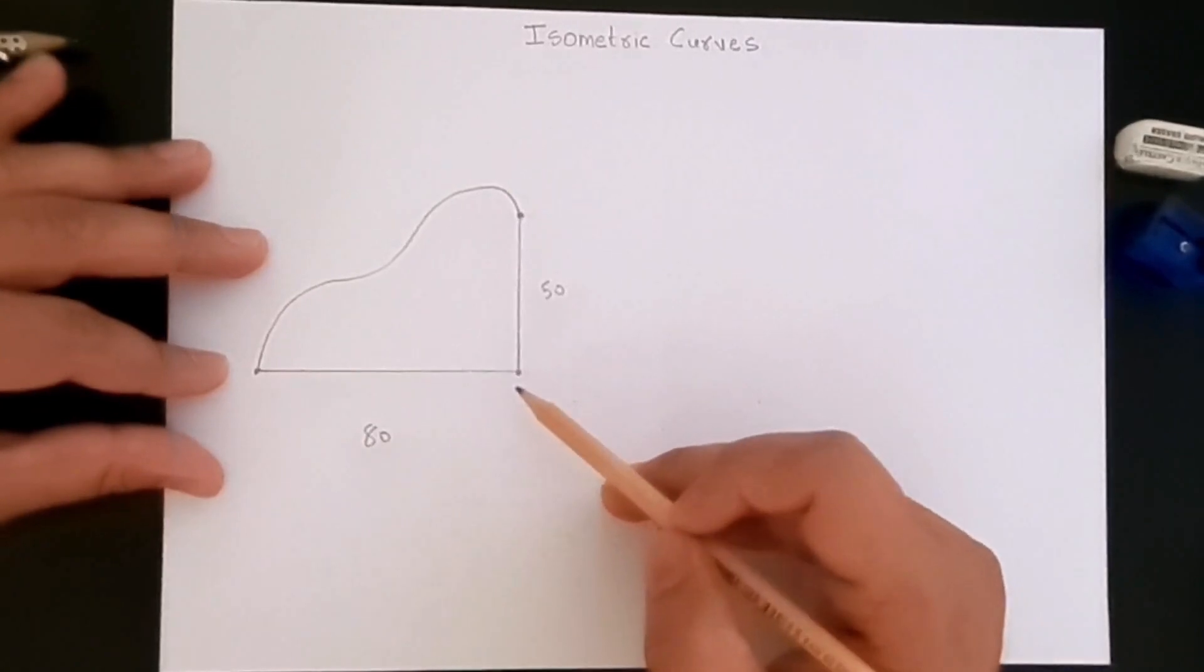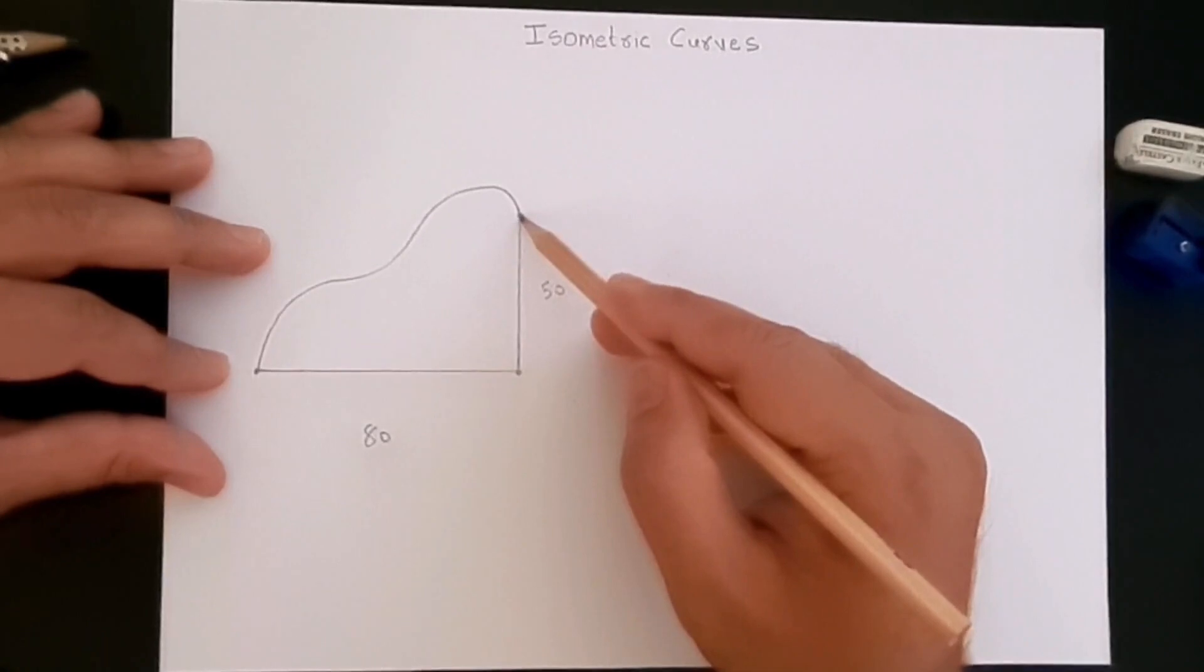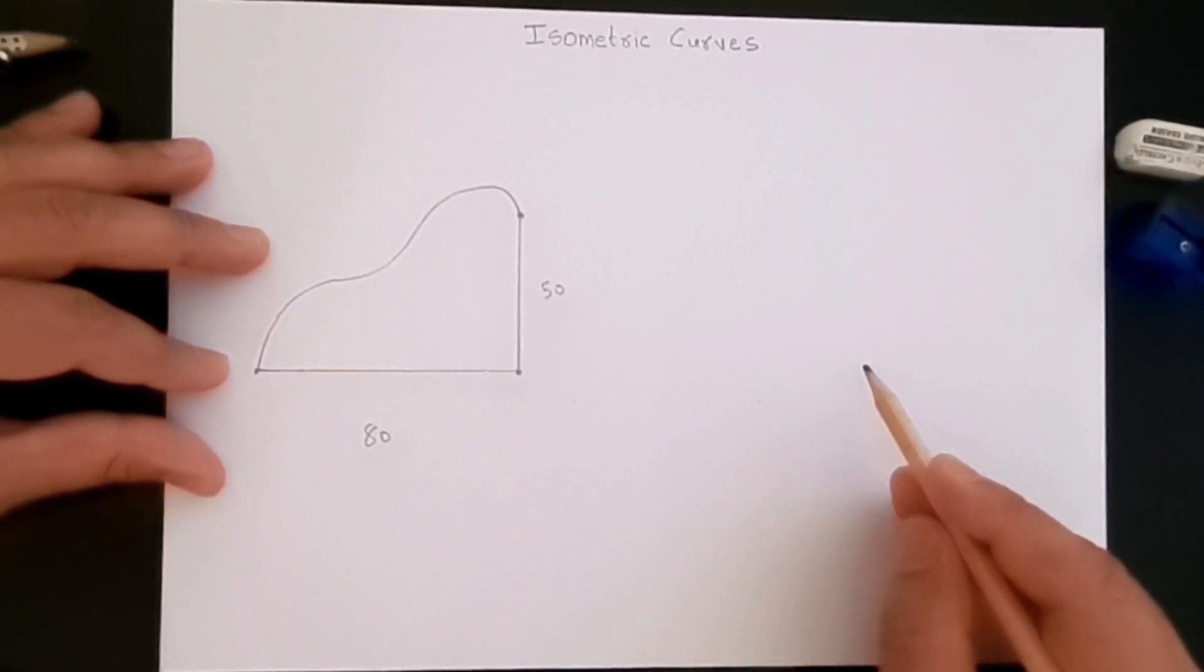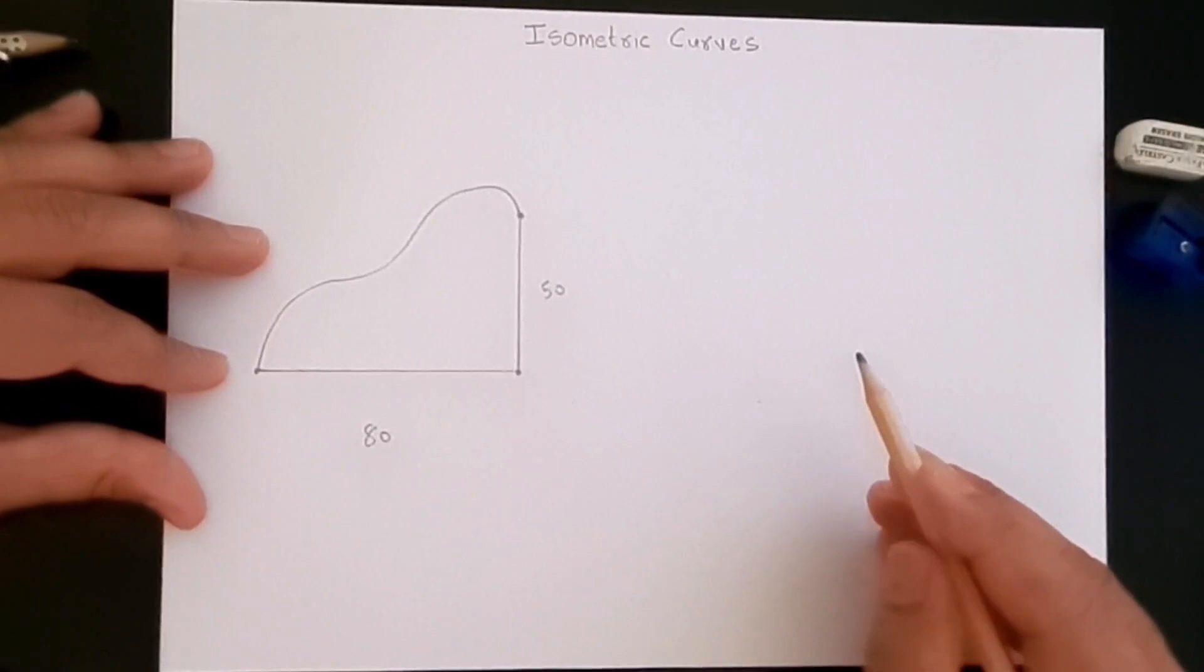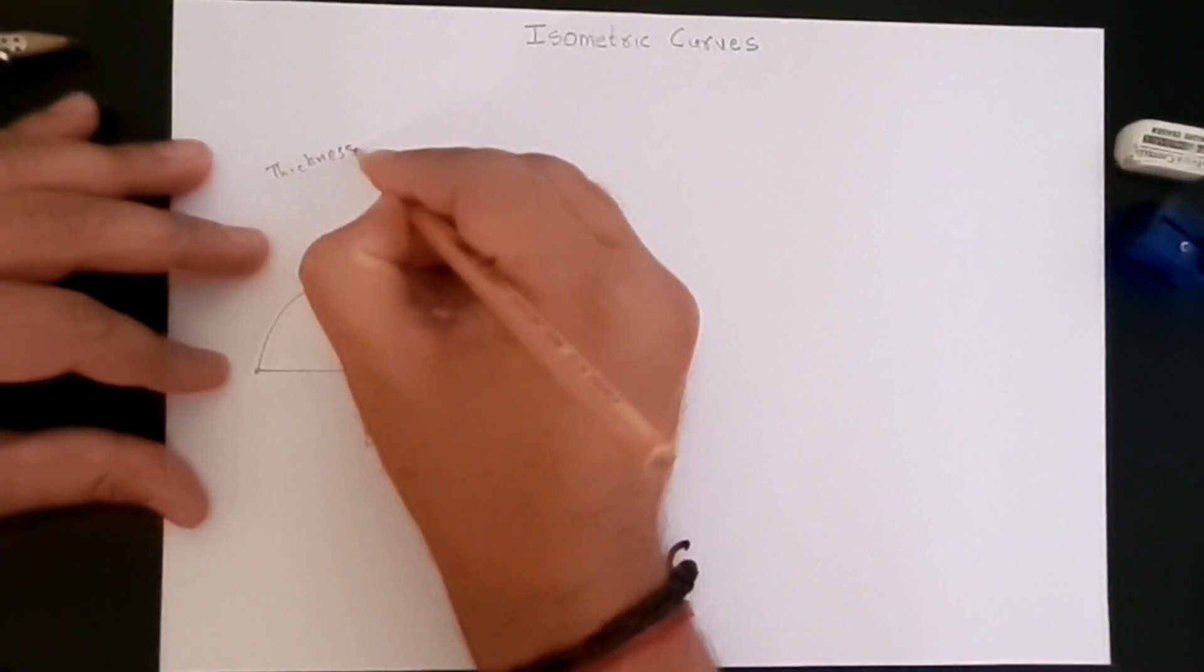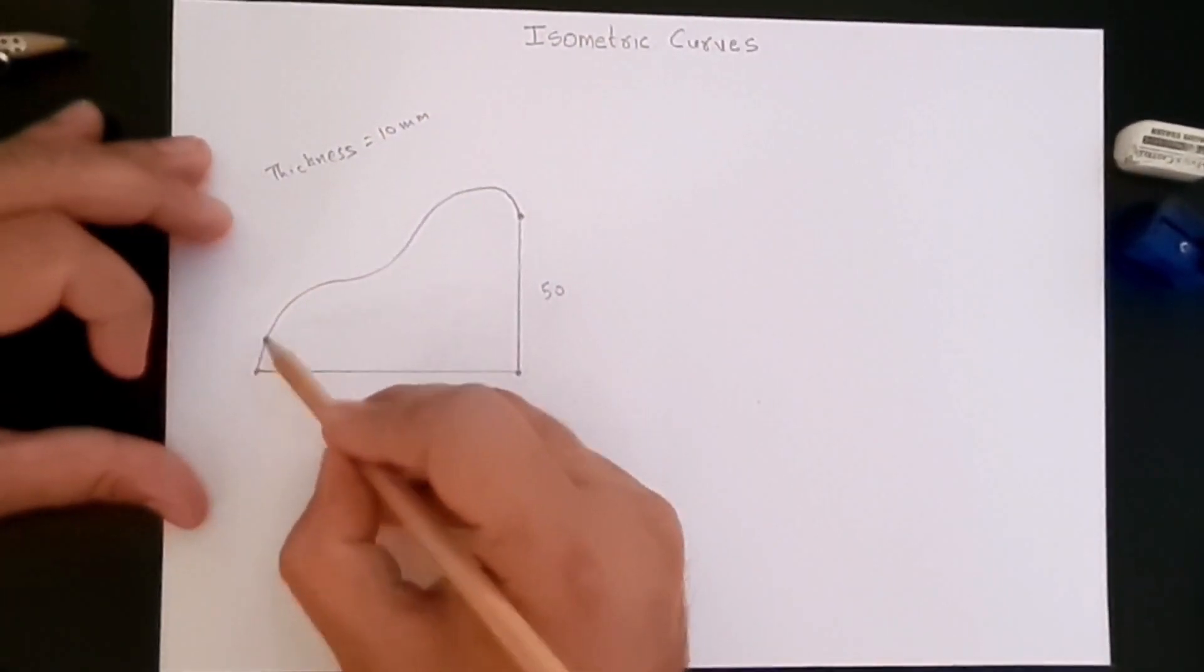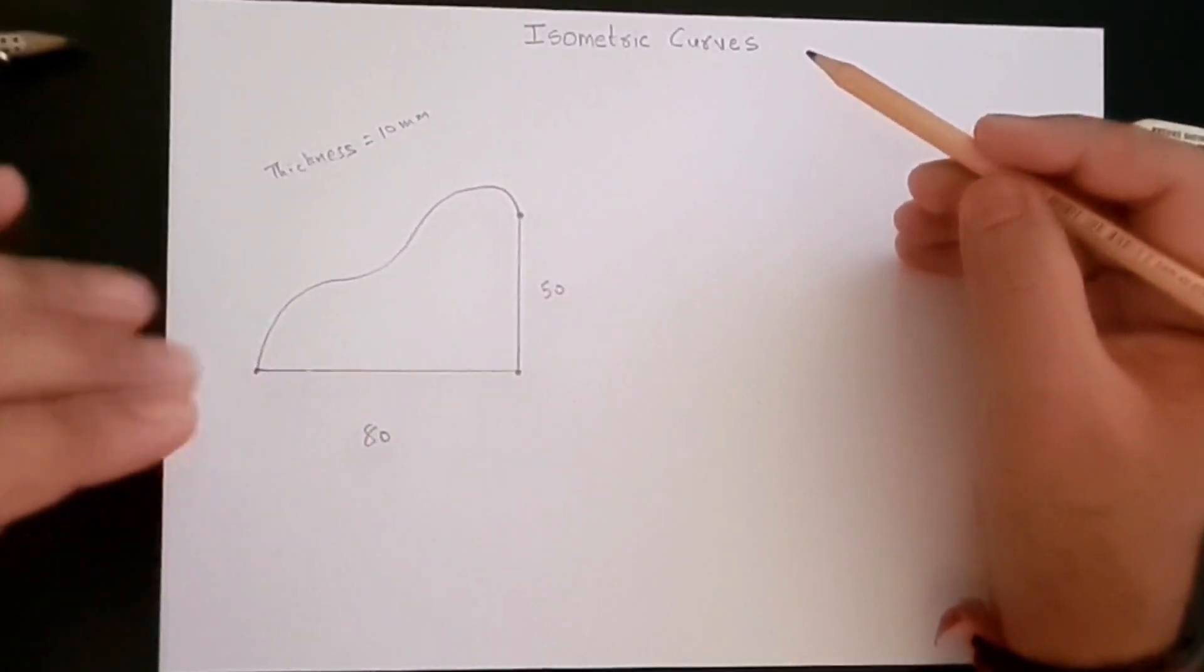Now here a curve is given to us. The length of the curve is 80 and the height, the straight height, is 50, but this height is a bit different. We have to create an isometric curve out of this thing. The other thing that is given to us is that the thickness of this part is 10 millimeters. So there is a depth involved here which we can't see because this is the front view of the part.